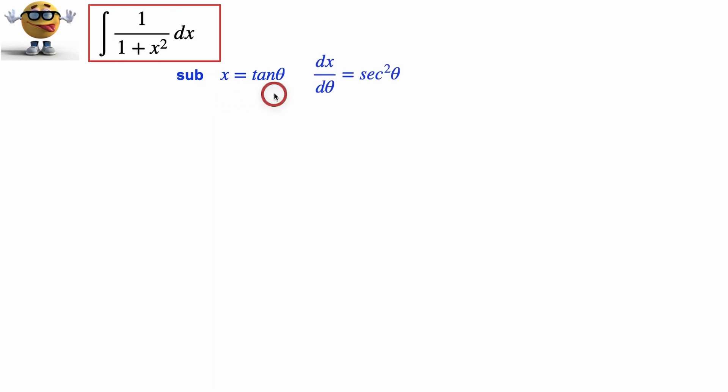So the derivative of x, which is the derivative of tan theta, is secant squared theta. Now it just is, but if you want to know how it just is, I have a video step-by-step on this derivative, so check that out if you like.